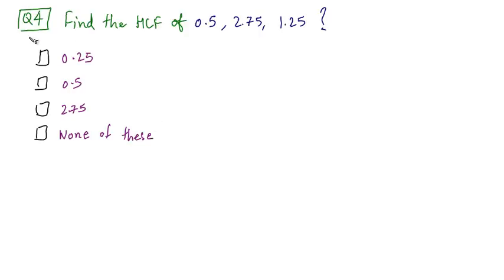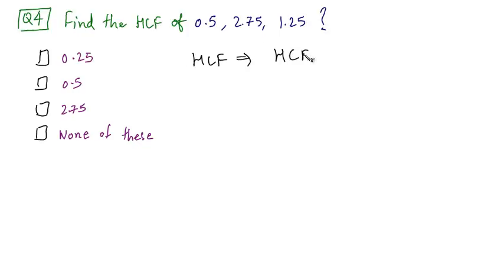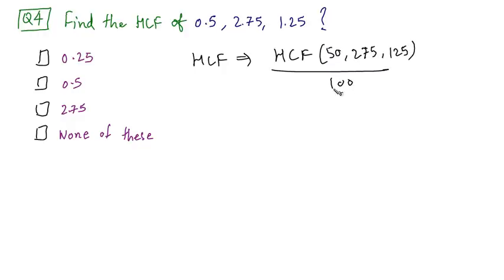Time for question number 4. Find the HCF of the same numbers that were given in question number 3. We can use the same method: first remove the decimal point, calculate the HCF, and then recover the decimal point. So the final answer would be HCF equal to the HCF of 50, 275, and 125, divided by 100, because we multiplied these numbers by 100 to remove the decimal point.